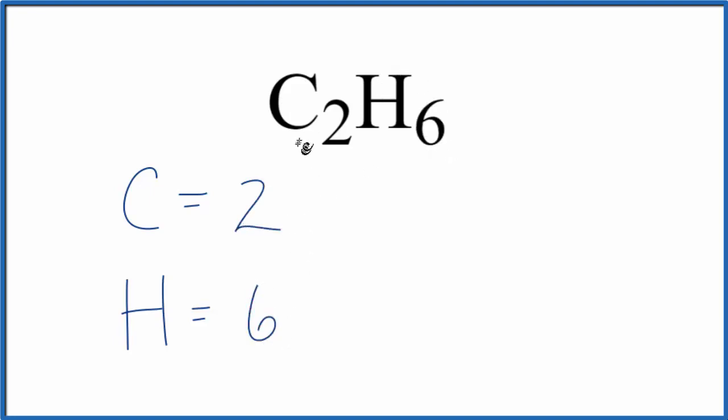To find the total number of atoms in C2H6, ethane, just add these up. 6 plus 2, 8. So there are 8 total atoms in C2H6.